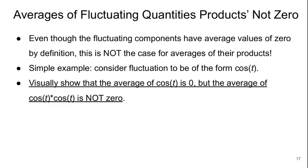So even though the fluctuating components by definition have average values of zero, that's not the case for the averages of their products. So you can see why this is by considering a really simple example. If we consider the fluctuation to just be a cosine function, you can visually show that the average of the cosine of t is zero, but the average of cosine squared t is not zero.